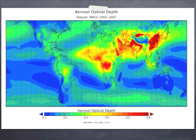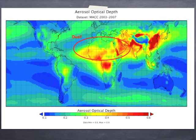Some of those sources are natural. For example, when strong winds blow over the desert, they can lift up dust into the atmosphere. This dust aerosol is then often blown over the Atlantic Ocean, with some of it sometimes even reaching the Caribbean and other parts of America.